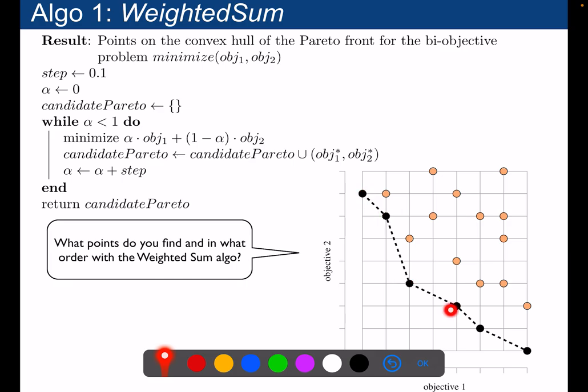One way to find this Pareto set is to use what we call the weighted sum approach. In the weighted sum approach, we do a convex combination of the two objectives, parameterized by alpha: alpha times objective 1 plus (1 minus alpha) times objective 2. We minimize this unique objective, and then we add the resulting point to the Pareto set — we make the union, adding this new solution that we just found.